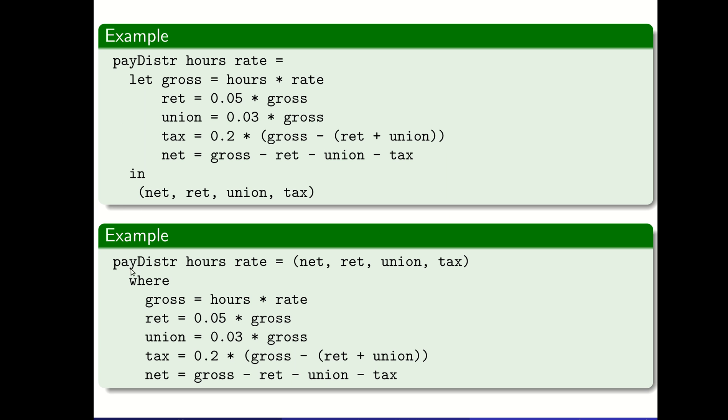Here's a pair of examples showing where versus let. We define pay distribution: if a person works a particular number of hours at a pay rate, we calculate a few things about their pay. The gross income is the hours times the pay rate. Their retirement withholding is a certain percentage times the gross. Their union dues are another percentage times the gross. You'll see we're using part of the let definition in the later things, and using some of the later ones in yet others. Tax is 0.2 times the gross minus the retirement and union.